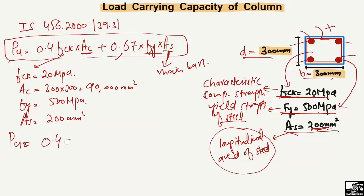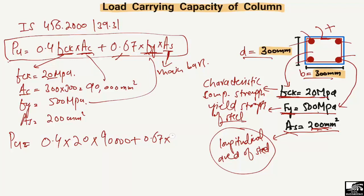Putting all these values into the equation: Pu = 0.4 × 20 × 90,000 plus 0.67 × 500 × 200. Multiplying and adding all these values gives us the load carrying capacity of the column.